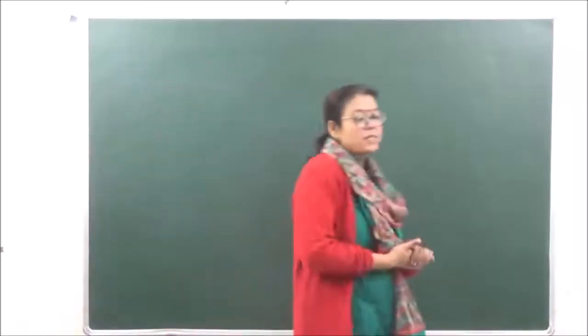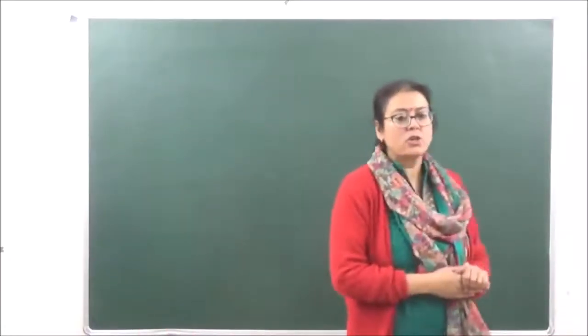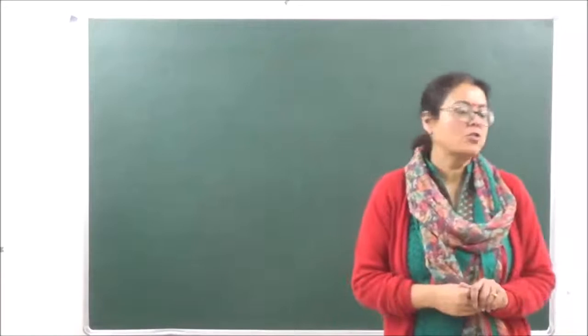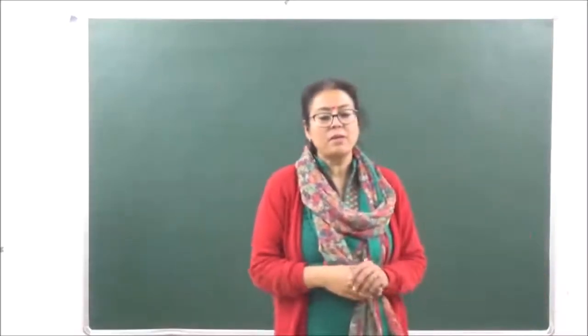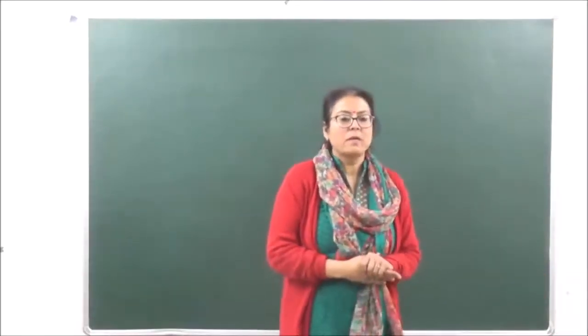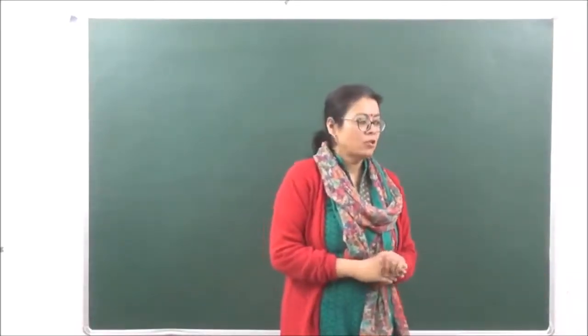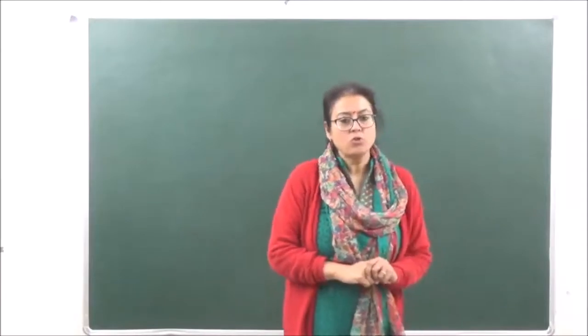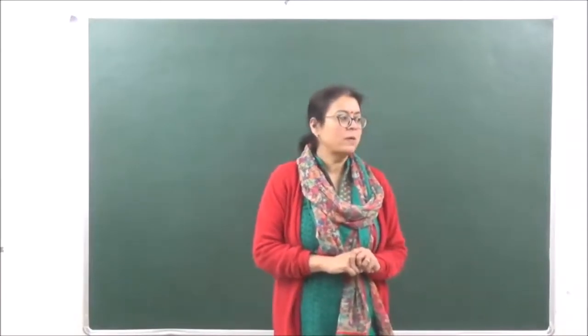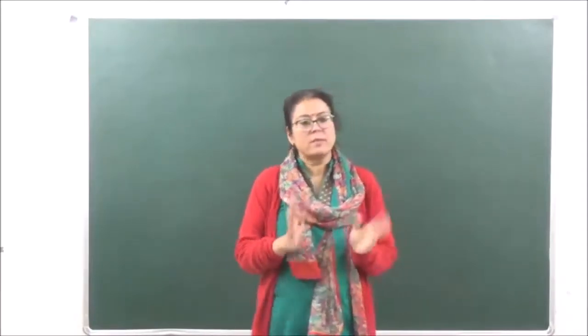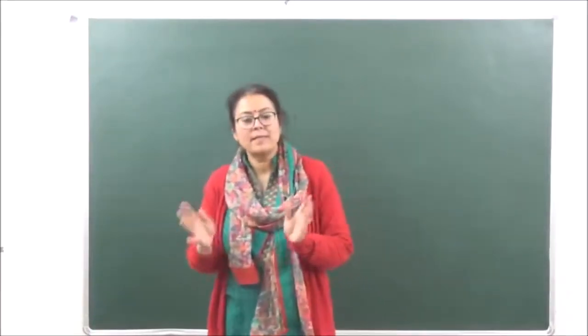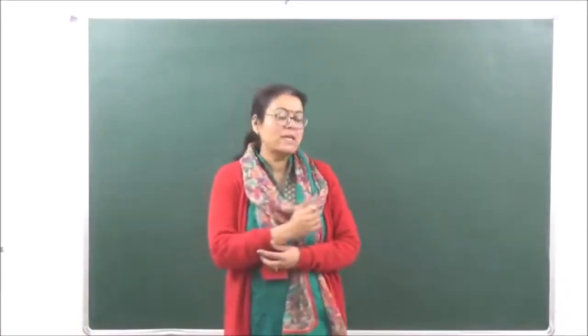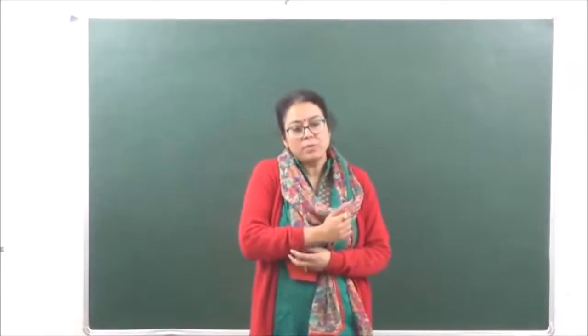Let's start with the next unit today. This is Unit 7 of your Class 11: Equilibrium. Chapter 8 has been divided into two sections — one which is known as Chemical Equilibrium and the second one which is known as Ionic Equilibrium.